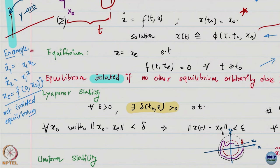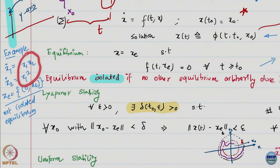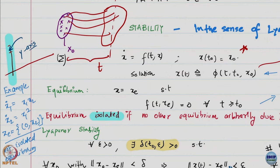Once x1 is zero, both equations are zero and nothing moves, so x2 is arbitrary. The equilibrium is the entire y-axis. This is a non-isolated equilibrium. An equilibrium is isolated if there is no other equilibrium arbitrarily close to it. If you have one equilibrium and no other equilibrium is arbitrarily close to it, it is isolated.